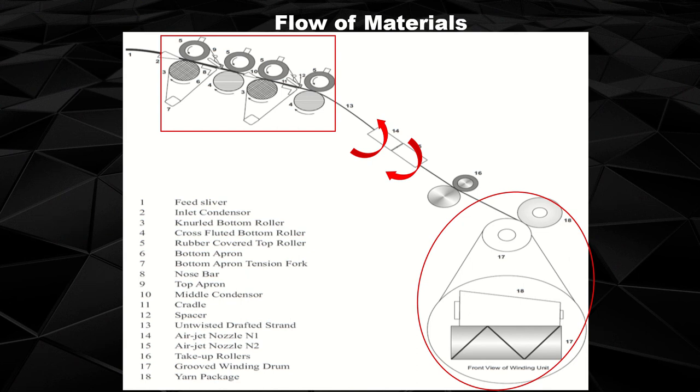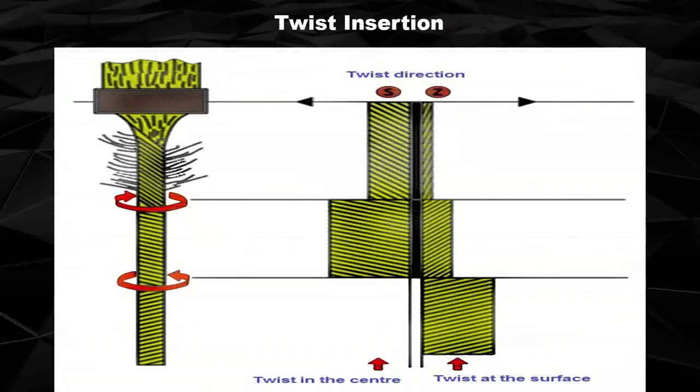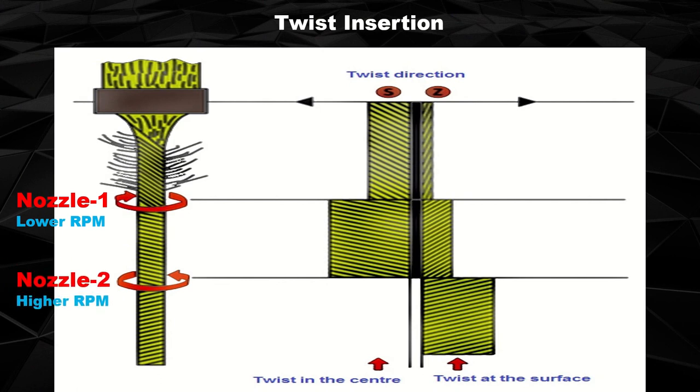The resultant yarn after twist insertion by nozzles is collected using the winding zone. When two nozzles are used in the system, nozzle one moves anticlockwise and imparts S-twist on the fiber strand. Nozzle two moves clockwise and imparts Z-twist. Due to difference in speed and direction of twist insertion using two nozzles, twist and untwist take place simultaneously. Finally, wrapping of surface fibers takes place in Z-twist direction, and core fibers are converted into a parallel strand.